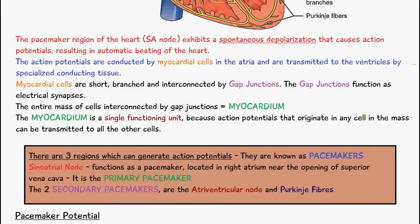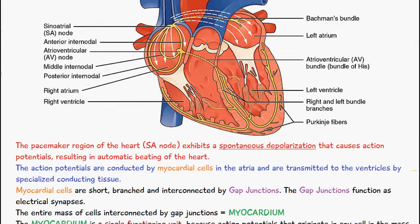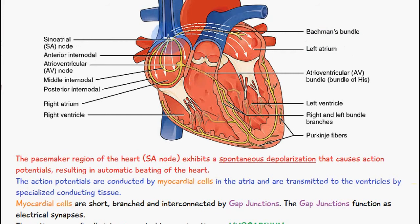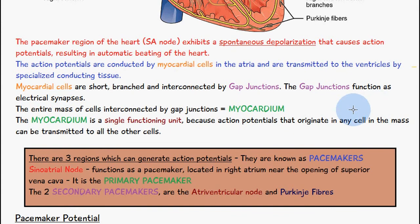There are three regions which can generate action potentials — they are known as pacemakers. The sinoatrial node functions as the primary pacemaker and is located in the right atrium near the opening of the superior vena cava. The two secondary pacemakers are the atrioventricular node and the Purkinje fibers.